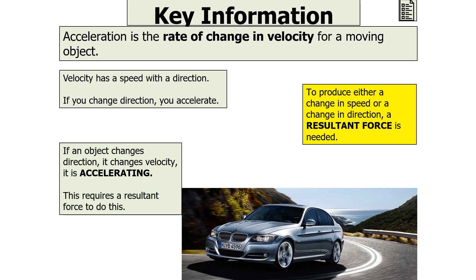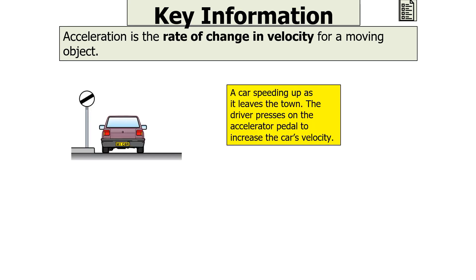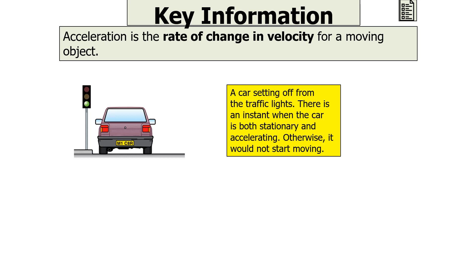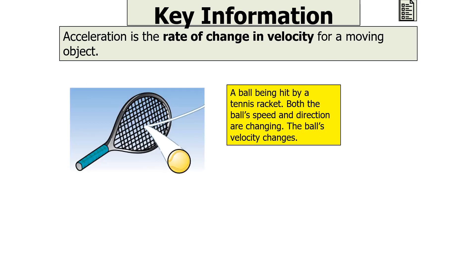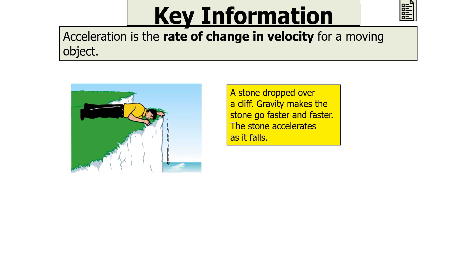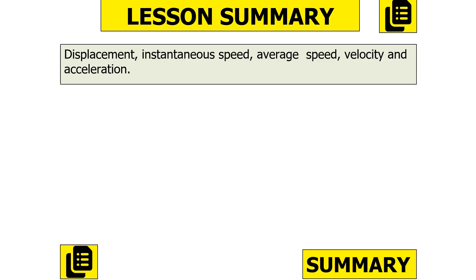To produce either a change in speed or a change in direction, a resultant force is needed. For example: a car speeding up as it leaves a town — the driver presses the accelerator, increasing the car's velocity, so it is accelerating. A car setting off from traffic lights is both stationary and accelerating, otherwise it would not start moving. A car travelling around a bend at steady speed has constant speed but changing velocity, so it is accelerating. A ball hit by a tennis racket changes both speed and direction, so it is accelerating. A stone dropped over a cliff is accelerated by gravity as it falls faster and faster.